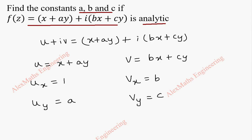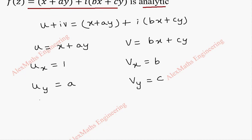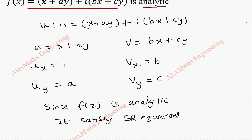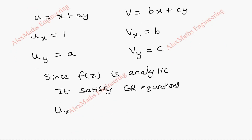So, now already we know it is analytic. Since f of z is analytic, we know it satisfies CR equations. Now the CR equations are ux equal to vy and uy equal to minus vx.